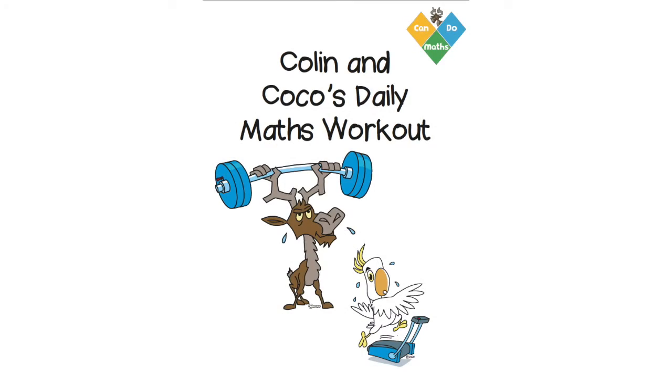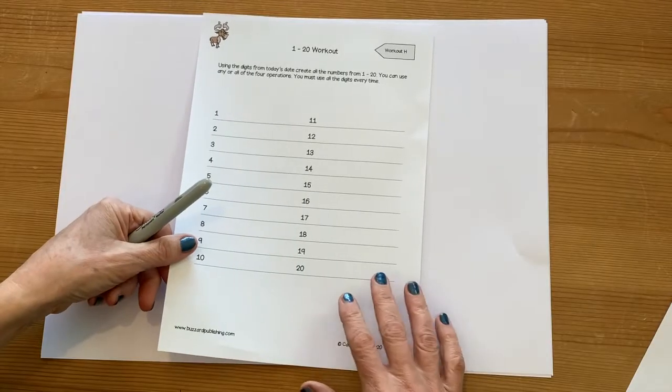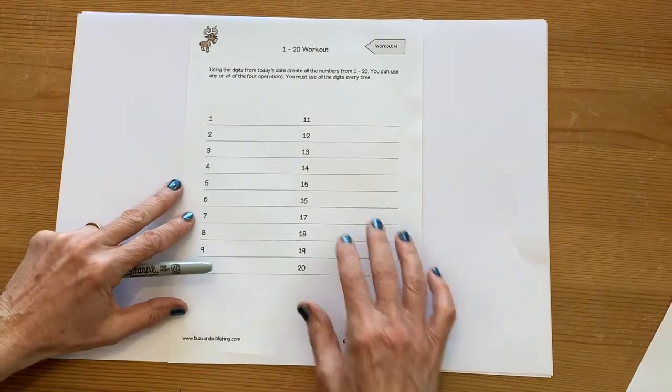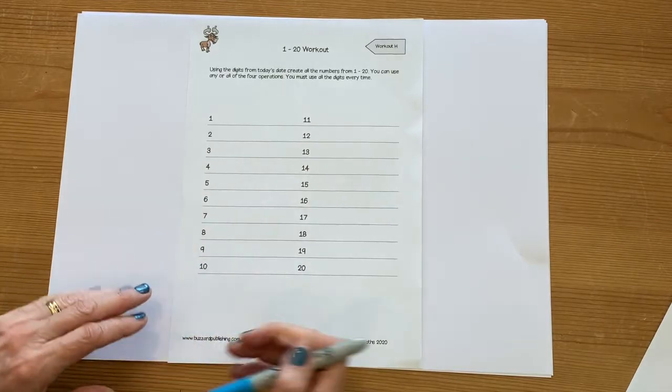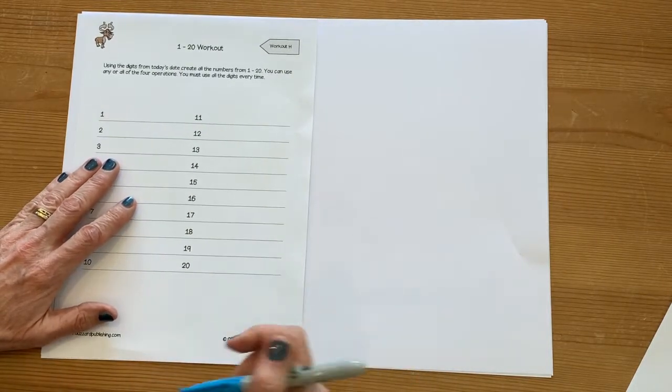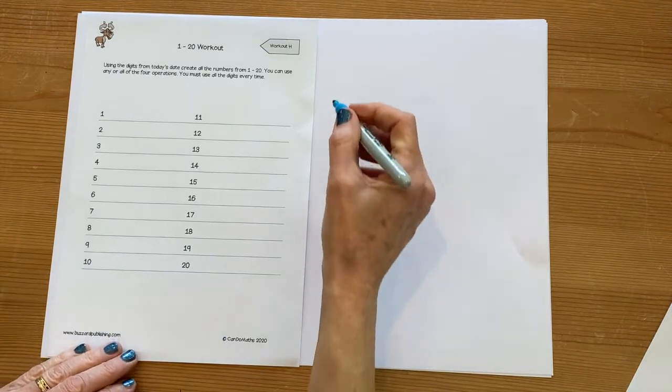On date five each week, we've got the same challenge where we're thinking about using the date to make some calculations. So this is the sheet that you're provided with. We're thinking about how can we use today's date to make all the numbers between one and twenty.